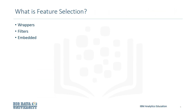Feature Selection is the process of selecting a subset of relevant features or variables. There are three main subset types: wrappers, filters, and embedded.